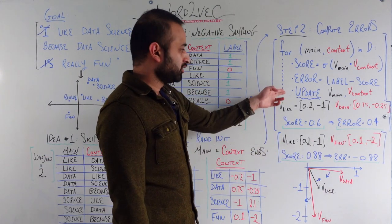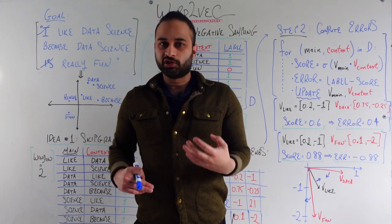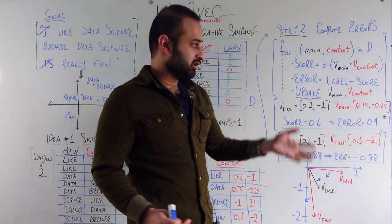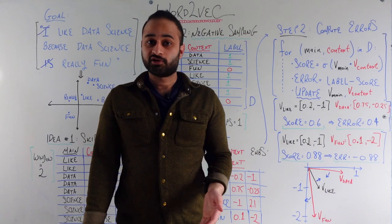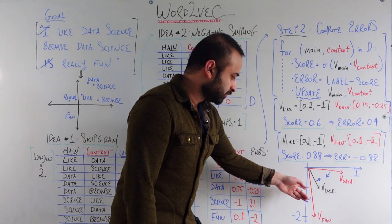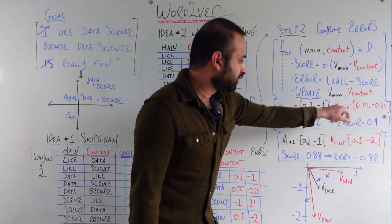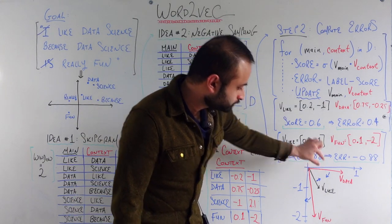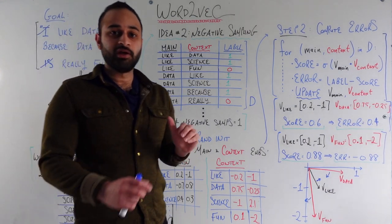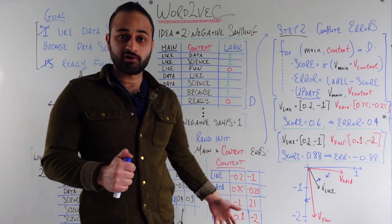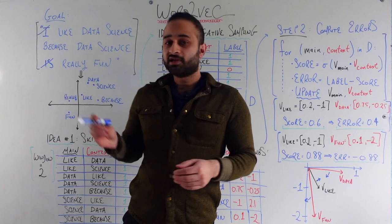So the last step is we update the main vector and the context vector. This 'update' can be as complex as using a neural network behind the scenes with these errors to update weights and biases, or as simple as literally moving these vectors a little bit in the vector space to respect these errors. So in this picture, we move the main vector 'like' and context vector 'data' closer to each other, and move 'fun' and 'like' further apart. After one pass through all the examples, we're delicately moving each vector — both main and context — so that words that are actually close to each other in the sentence end up a little bit closer, and words that are not close end up a little bit further.